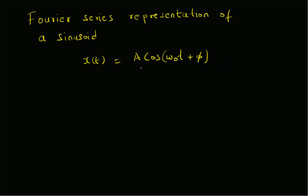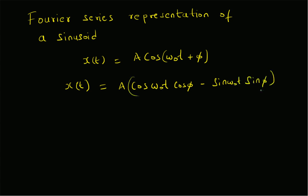By definition, using basic trigonometry, cos(ω₀t + φ) expands as A·cos(ω₀t)·cos(φ) minus A·sin(ω₀t)·sin(φ). So that is the trigonometric identity for cos(ω₀t + φ).